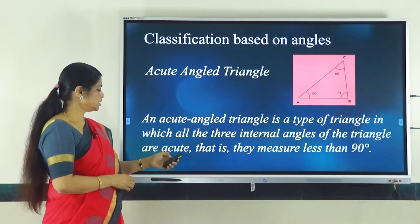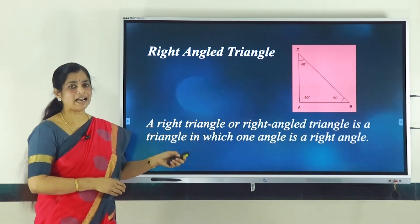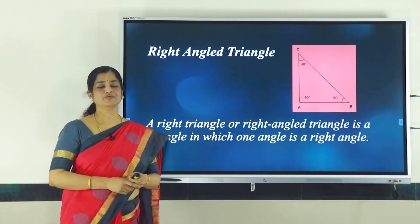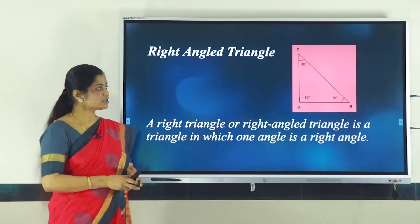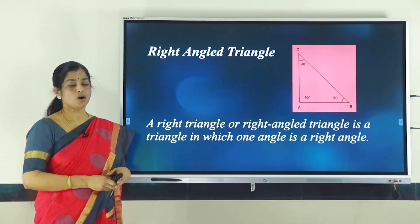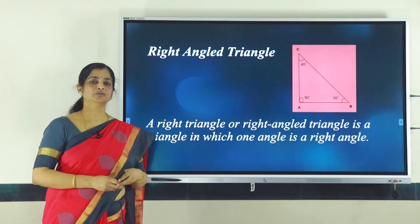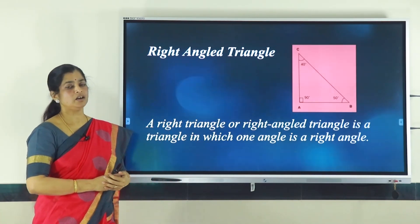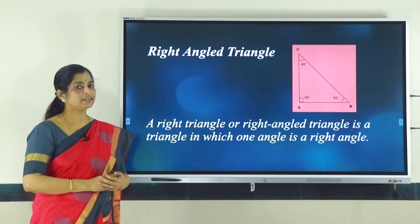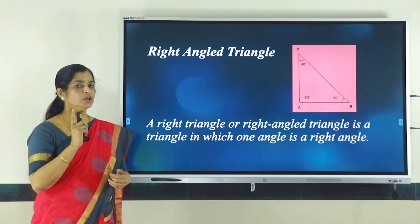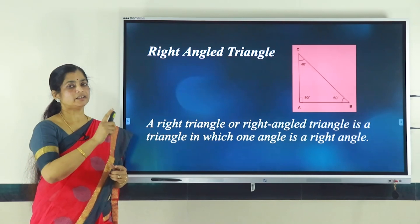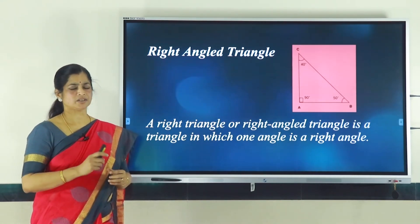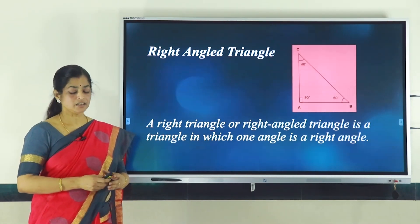The next type is the right angle triangle. A right angle is one which measures 90 degrees. In this triangle, you can see one angle is 90 degrees and the other two angles are less than 90. In a right angle triangle, you have only one 90-degree angle and the other two must be acute. Such a triangle is called a right angle triangle.